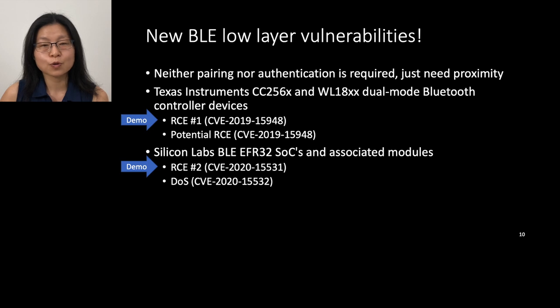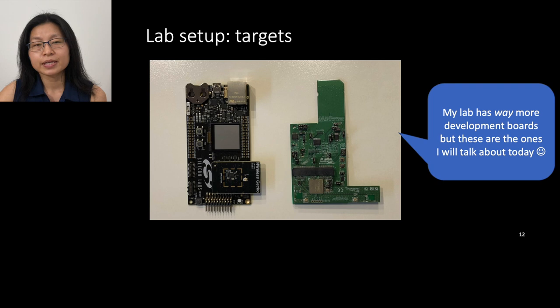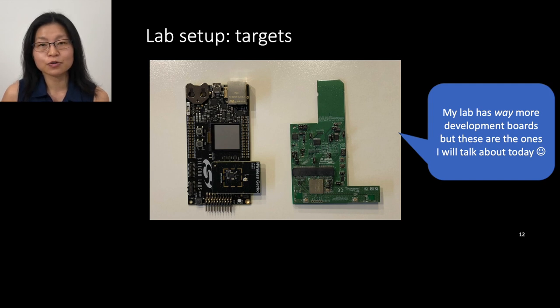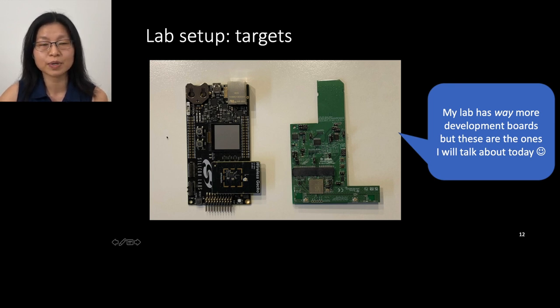I've prepared demos for the two RCE vulnerabilities and will briefly explain two other vulnerabilities. Before talking about the vulnerabilities, I wanted to explain how I set up my lab for vulnerability hunting. Here is a development board. I recommend starting with dev boards because it's easier to find vulnerabilities and make exploits — in many cases you can do hardware debugging. My lab has more than a dozen dev boards, but I'm showing just the two I'll be talking about today.